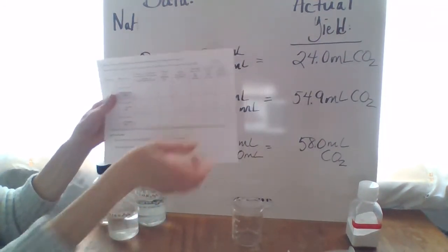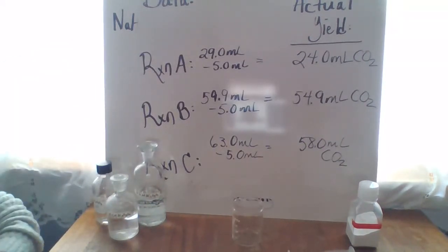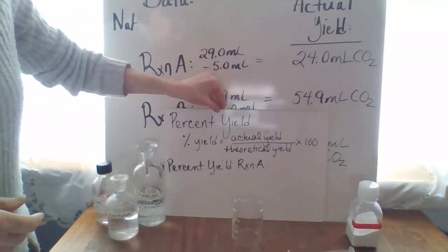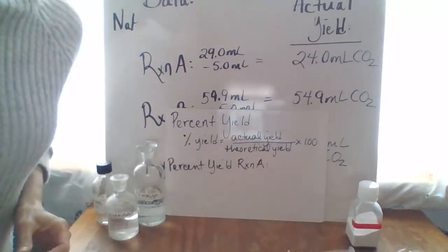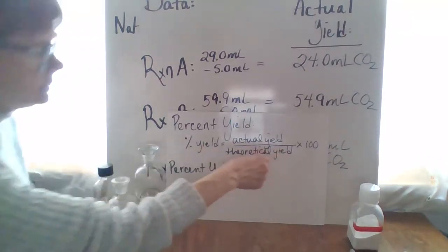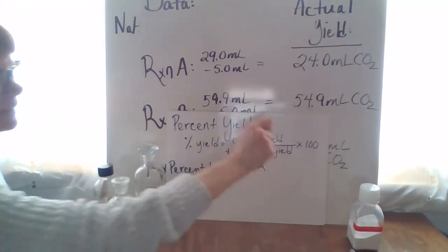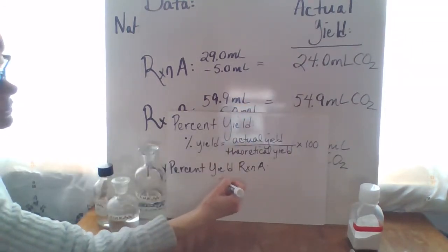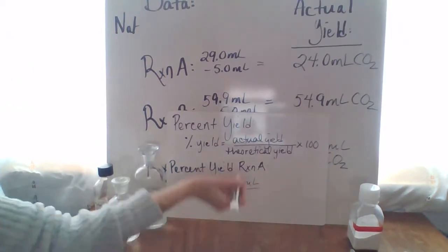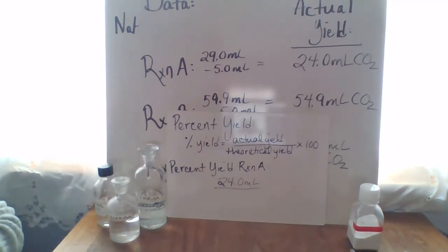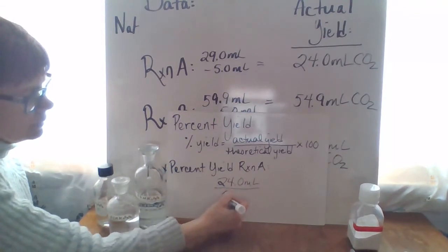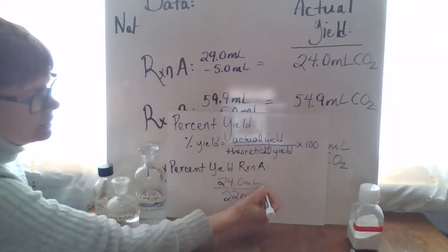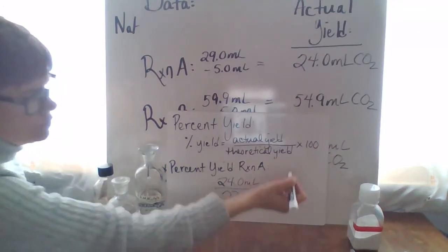Next, we'll look at percent yield for reaction A. And we'll start with the formula, which is if we have a percent yield, we look at our theoretical yield. That's going to be in the denominator. We get that from stoichiometry. And we need our actual yield from the experiment. So in order to solve for this, let's take our actual yield from above, which is 24.0 milliliters. And now we'll go back into our table and look at the theoretical yield for your reaction A, which was 22 milliliters. Which is using stoichiometry. We determine this is how much of the CO2 should be produced.